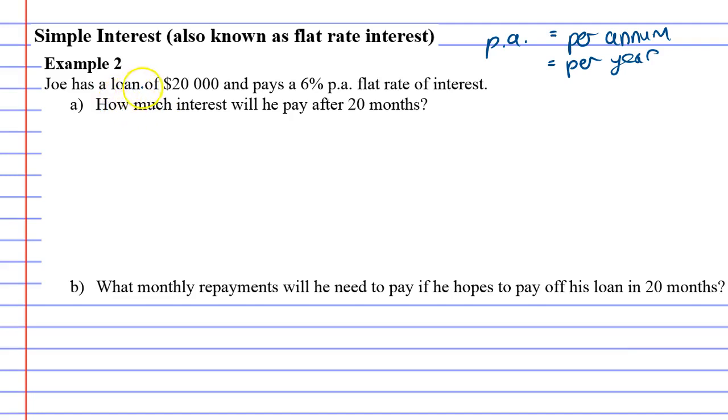Right, Joan has a loan of 20 grand and pays a 6% per annum flat rate of interest, meaning simple interest. Question A, how much interest will he pay after 20 months? And whenever you get a question and they give you something in months, notice in the last question we had some months, but we were able to convert it to 3.5 years. This one is a little tricky to convert to years. We're going to keep it as months, but we'll get to there in a second. And let's just look at each pronumeral.